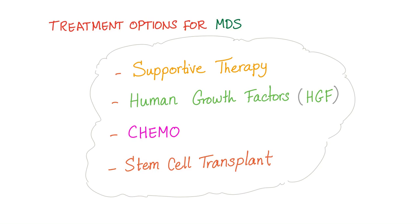The last resort for any leukemia is stem cell transplant. Anti-cancer drugs are called chemotherapy. We also support the bone marrow — since there is pancytopenia, we use growth factors to help platelets, red blood cells, and white blood cells mature. If there is no hope for cure, we offer supportive therapy, because doctors are compassionate human beings.